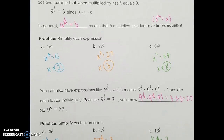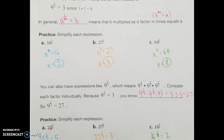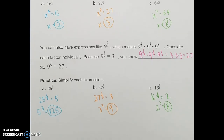Let's try 25 to the 3 halves power. Think of the bottom of the fraction first — 25 to the 1 half power. What number squared gives 25? That's 5. Since the top of the fraction is 3, we take 5 to the 3rd power: 5 times 5 times 5 equals 125. So 25 to the 3 halves is 125.